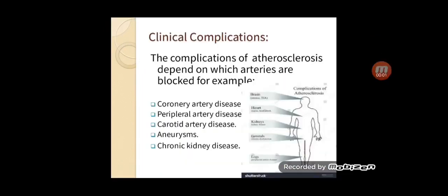The complications of atherosclerosis depend on which arteries are blocked. For example, we have coronary artery disease, peripheral artery disease, carotid artery disease, aneurysms, and chronic kidney disease. Coronary artery disease results from narrowing of the arteries supplying the heart. It can cause chest pain or angina, heart attack, or even heart failure.